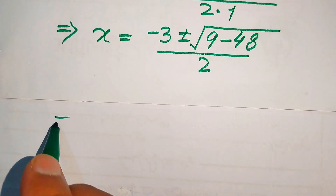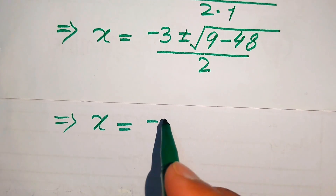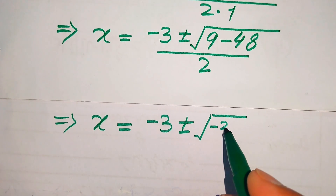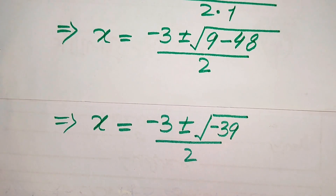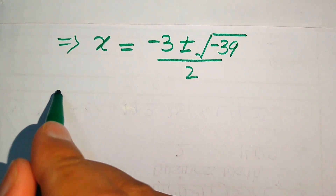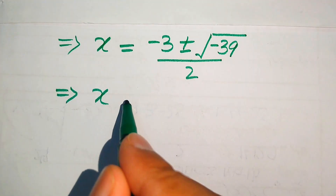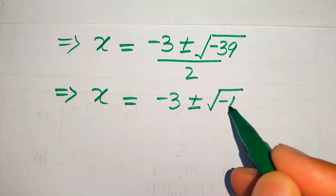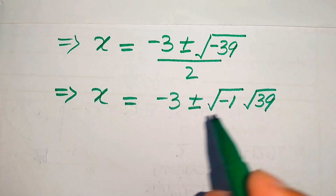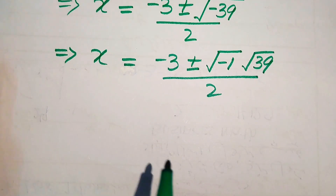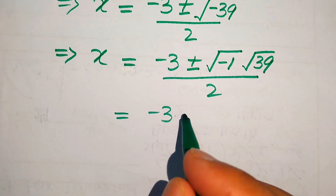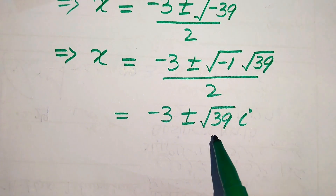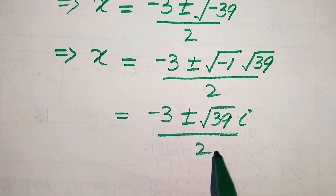Simplifying further: 9 minus 48 equals minus 39, so we have x equals minus 3 plus or minus square root of minus 39, divided by 2. We break the square root as square root of minus 1 times square root of 39. Since square root of minus 1 equals iota (i), we get x equals (minus 3 plus or minus i√39) divided by 2.